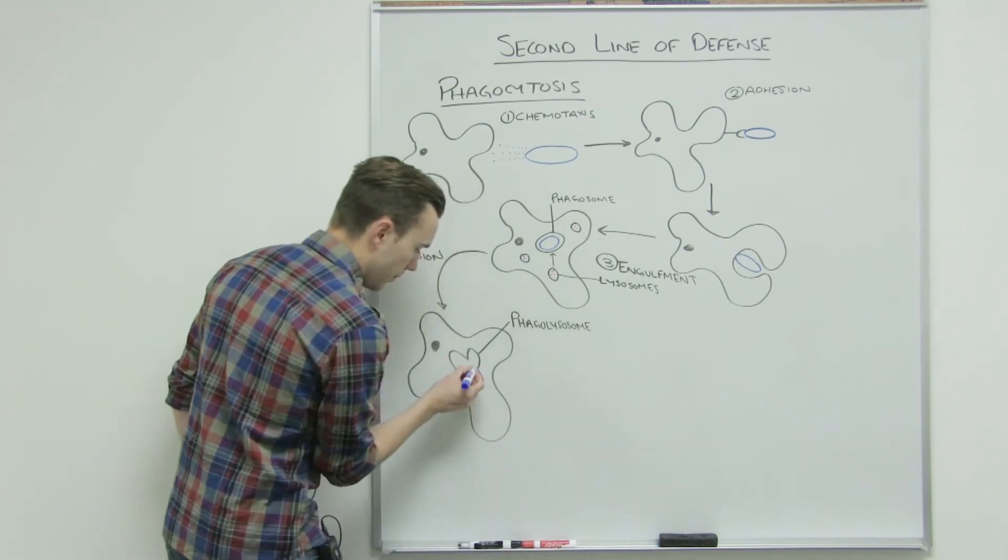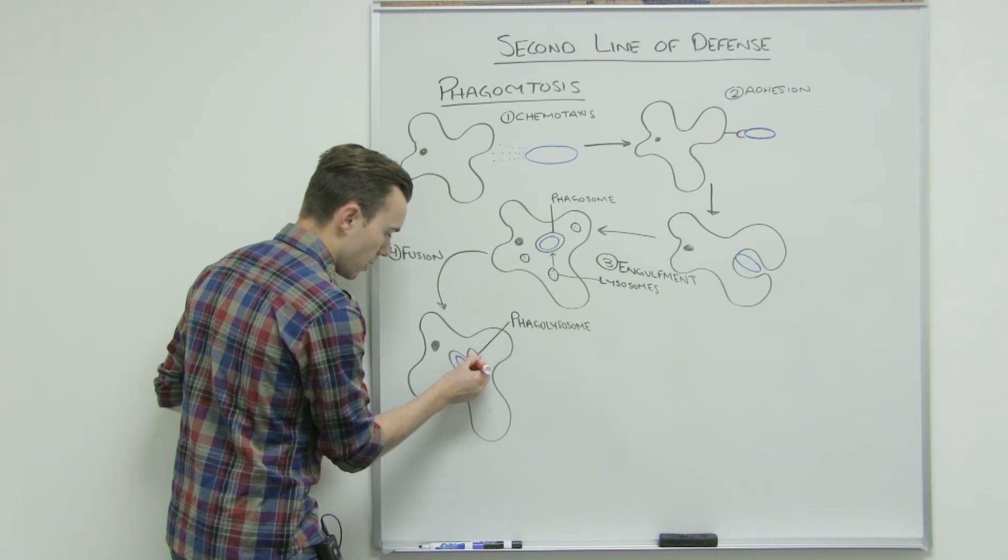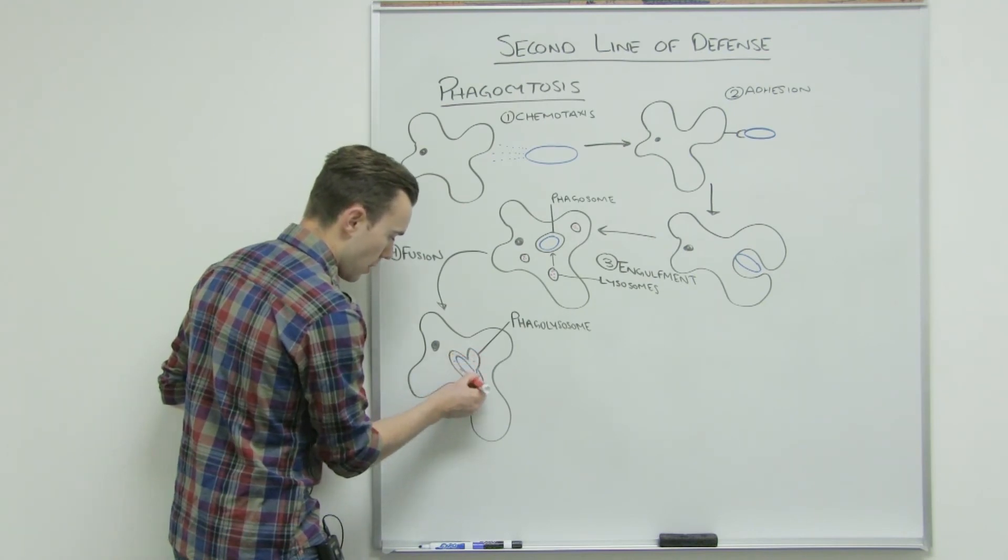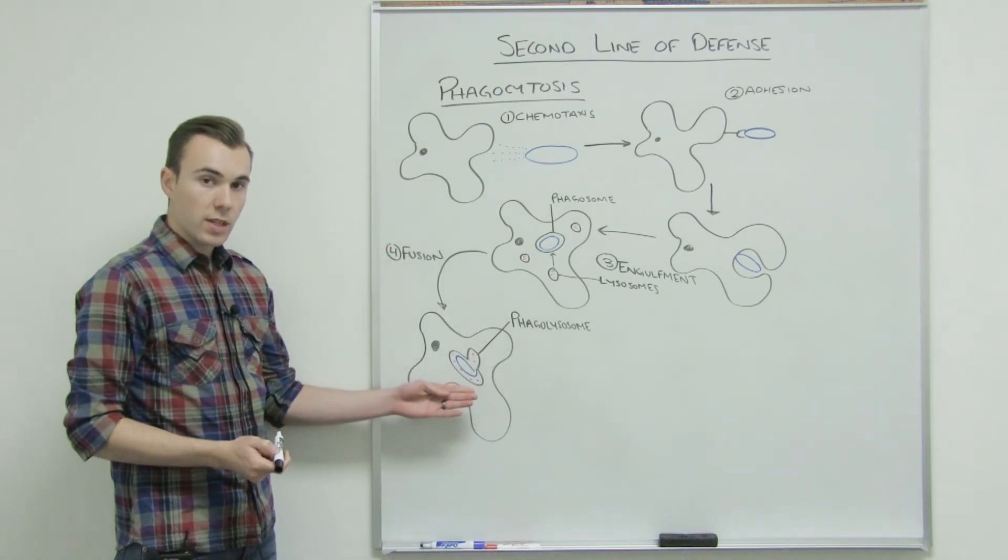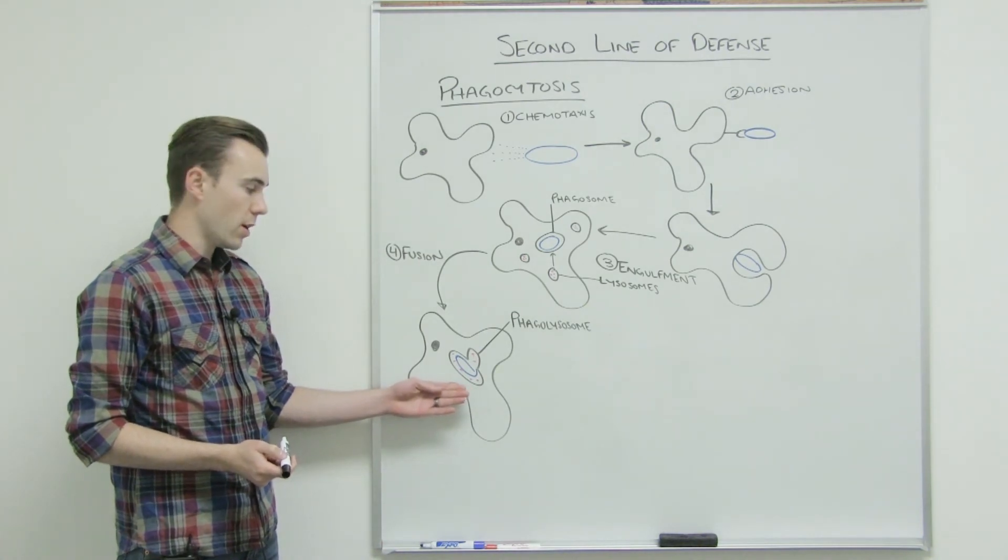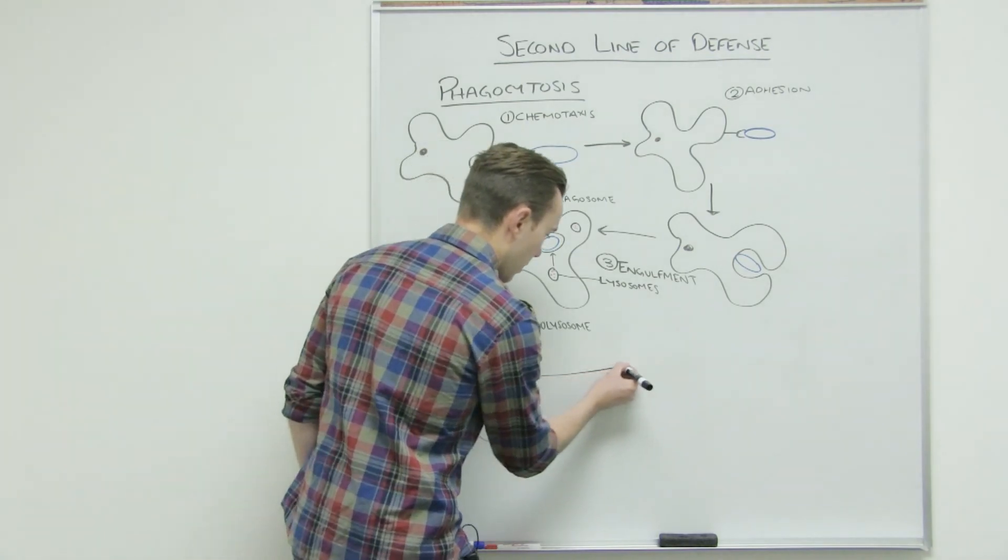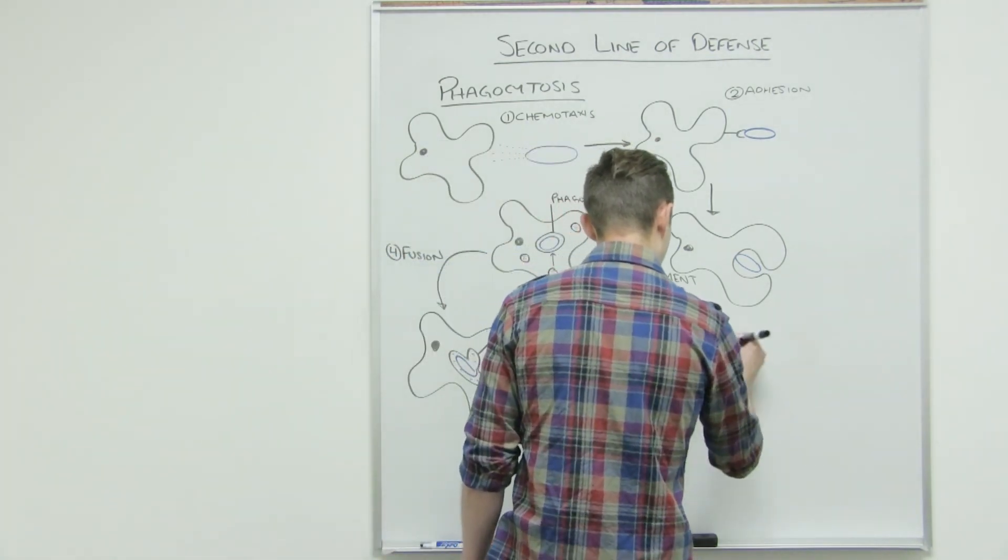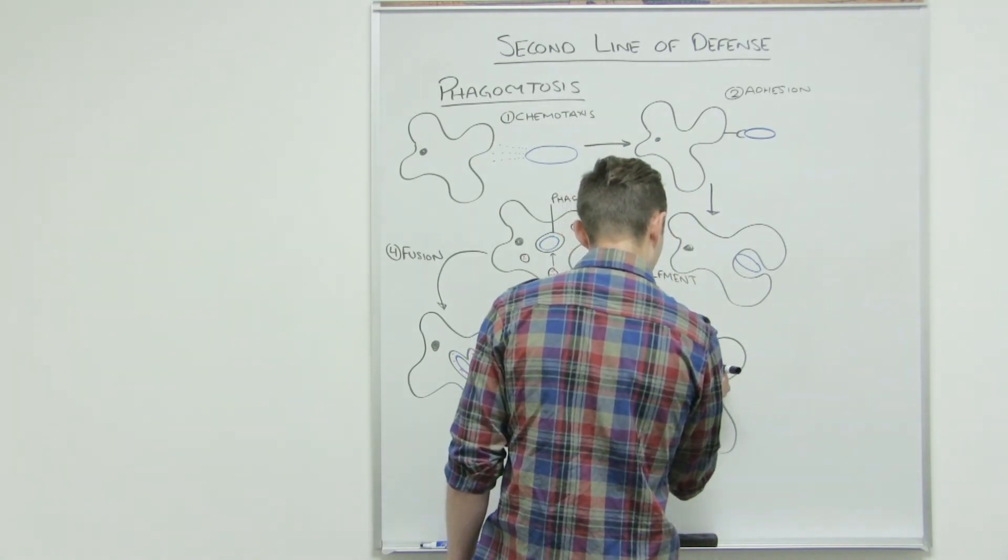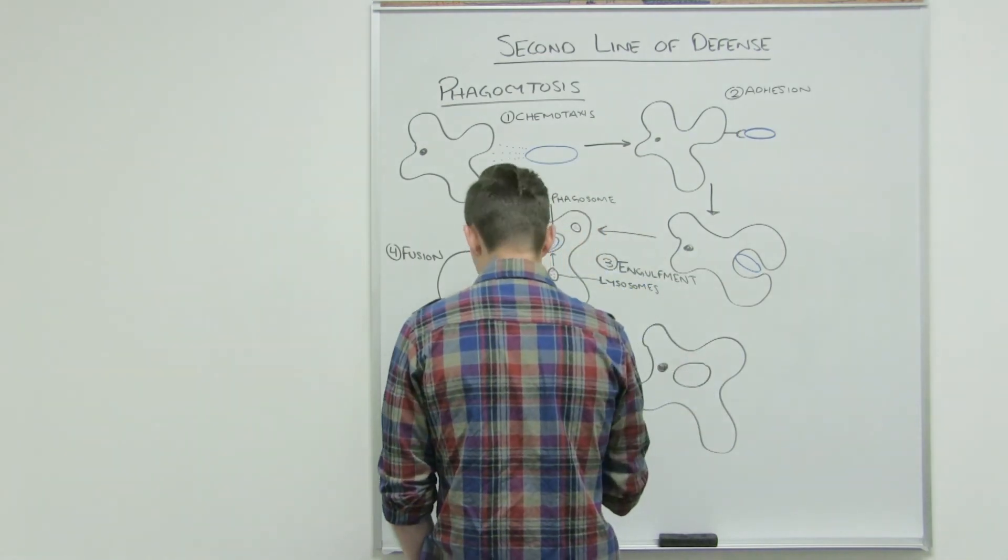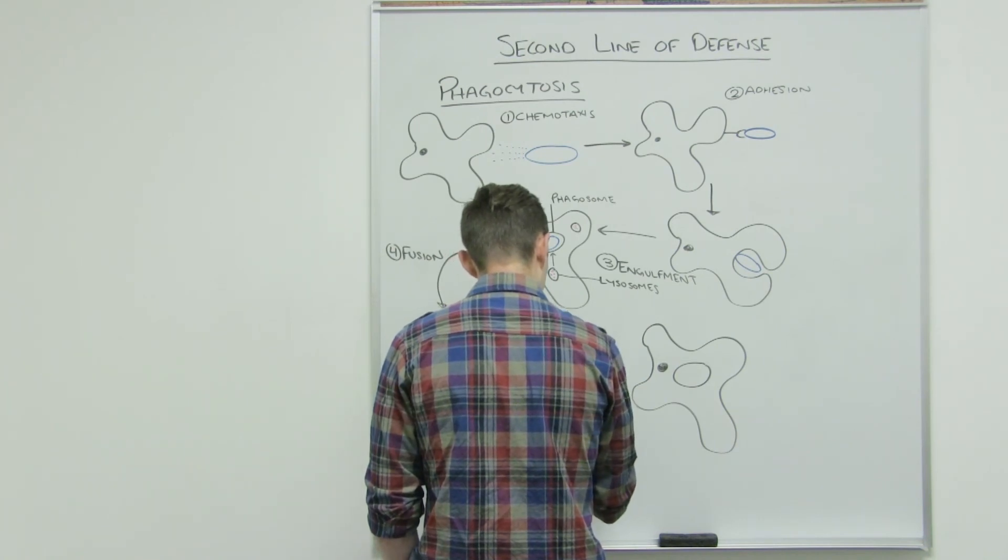So the microbe is in here, and now the lysosome is going to be able to dump all its dangerous chemicals inside this phagolysosome. Obviously all these dangerous chemicals are not going to be beneficial for this microbe. It's going to actually result in its death. So the last step is destruction. So there's five steps of phagocytosis.